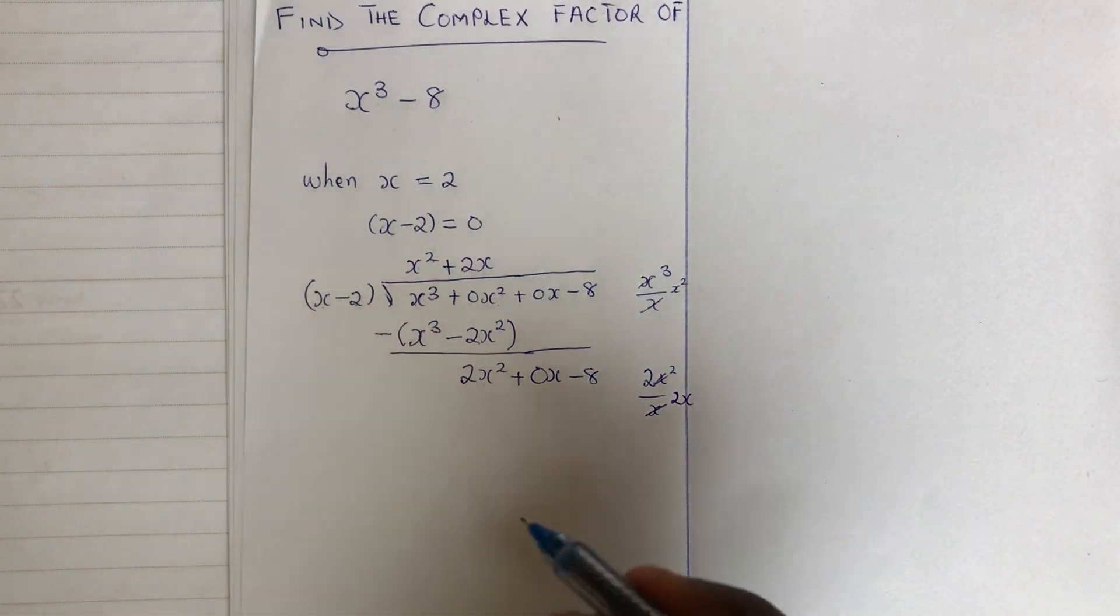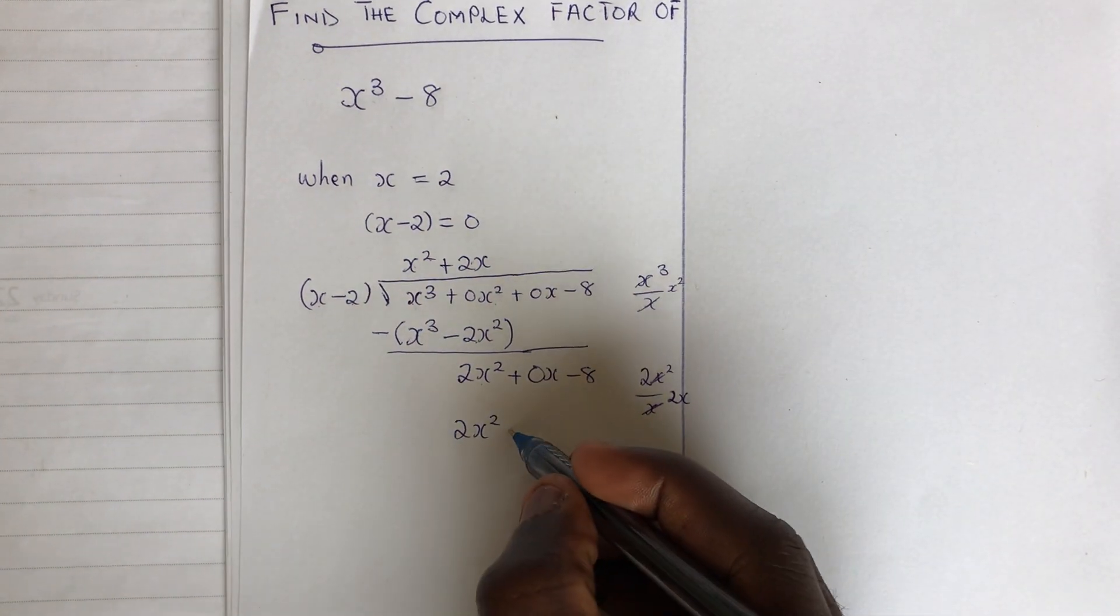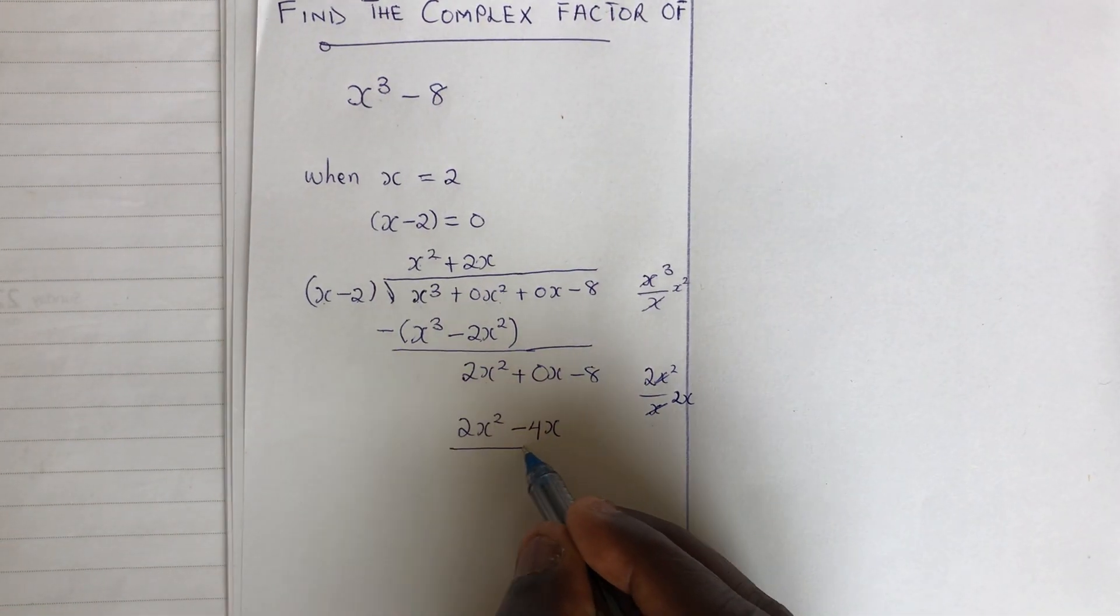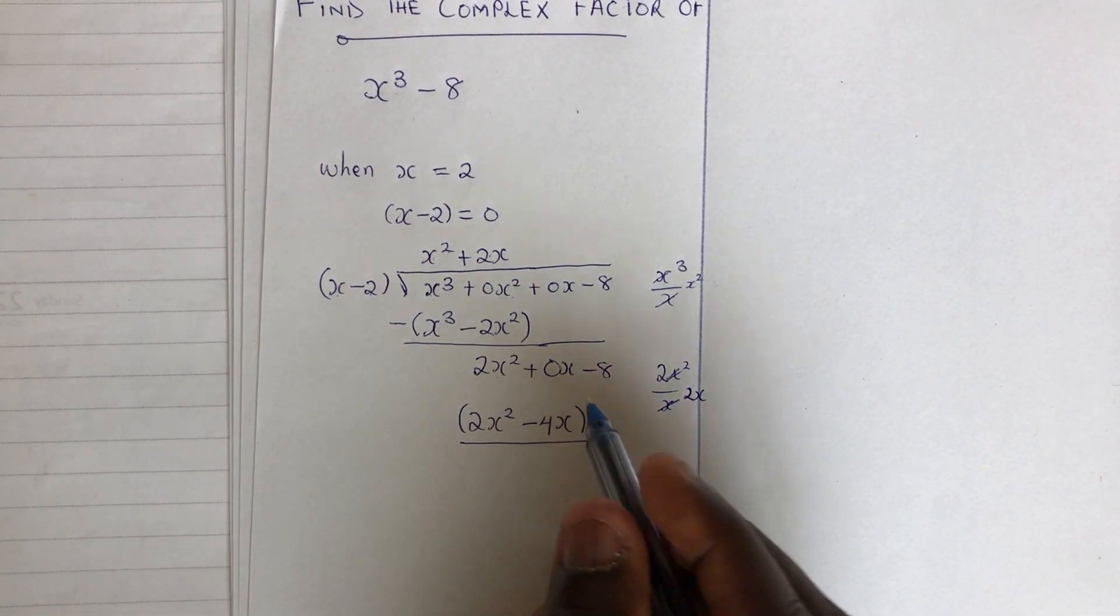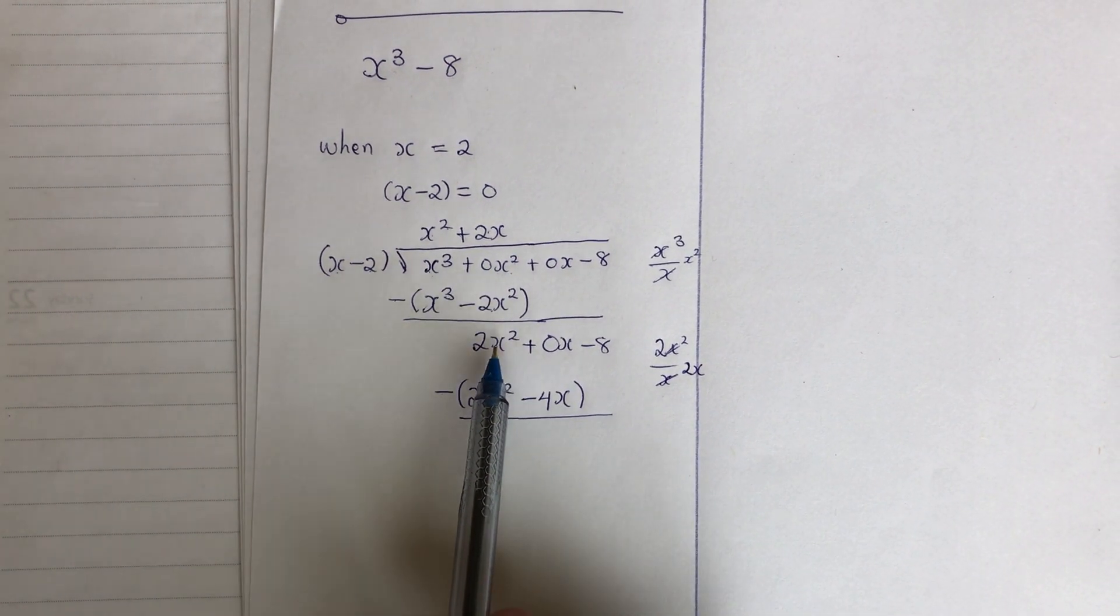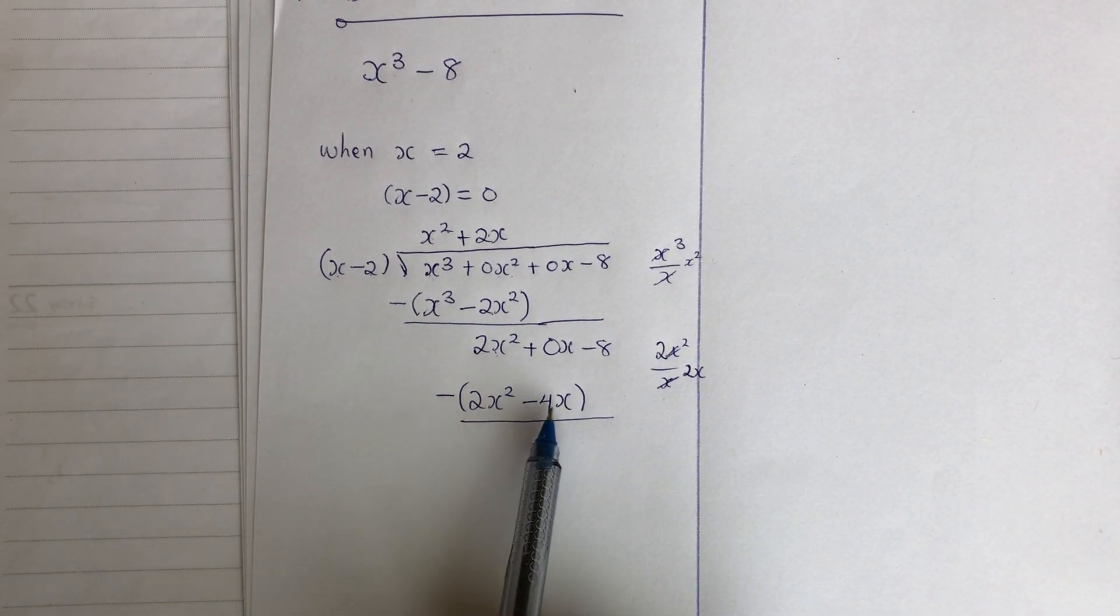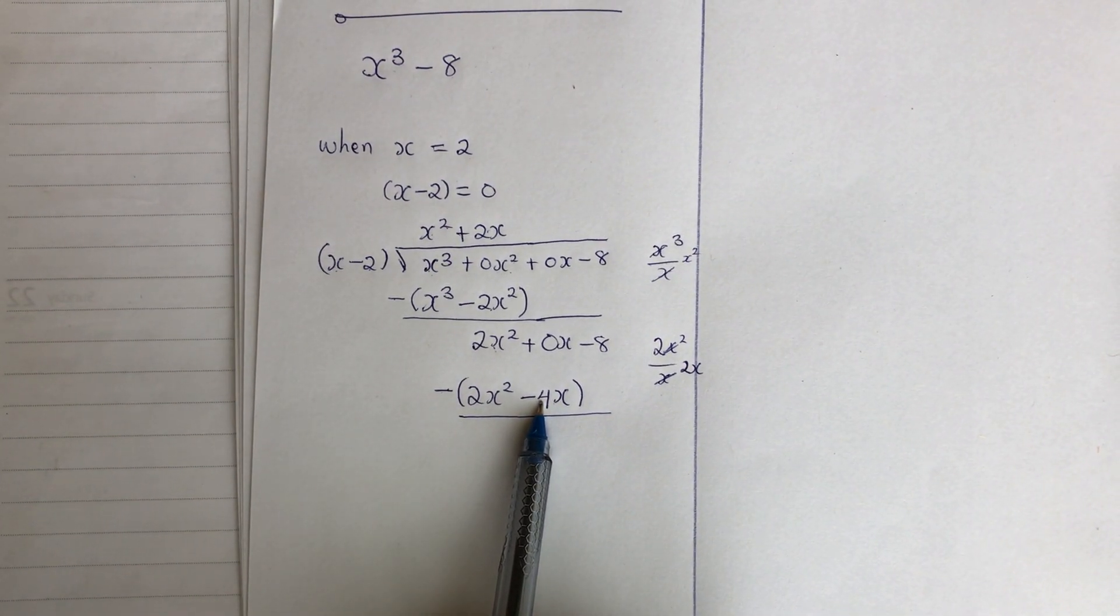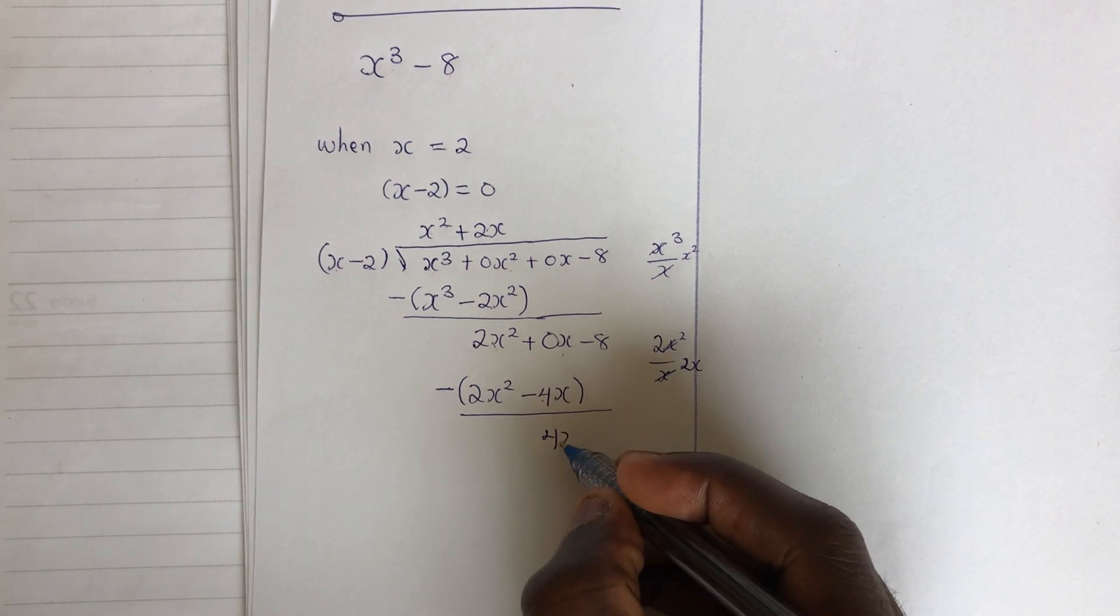2x times x will give us 2x squared. 2x times negative 2 will give us minus 4x. Underline this one. Subtract the result from the dividend we have here. So now, negative times this is giving us minus 2x squared. Add it to this term. We have 0. I will not write that. So I am moving on to the next. Negative times this is giving us plus 4x. Add it to this term. It will still give you 4x. So I will write my 4x.